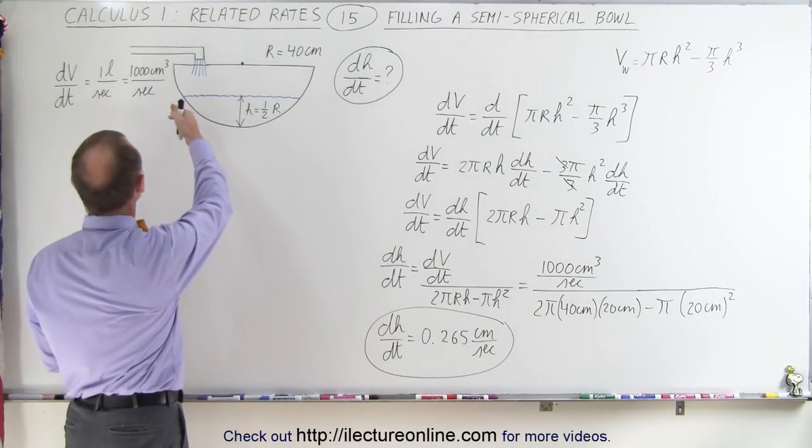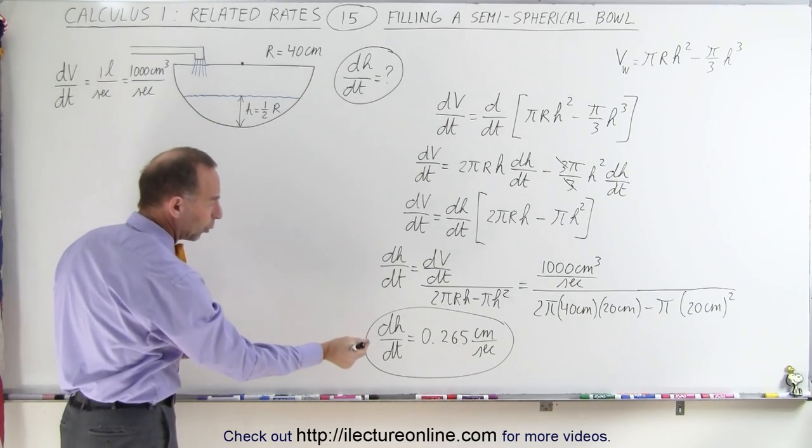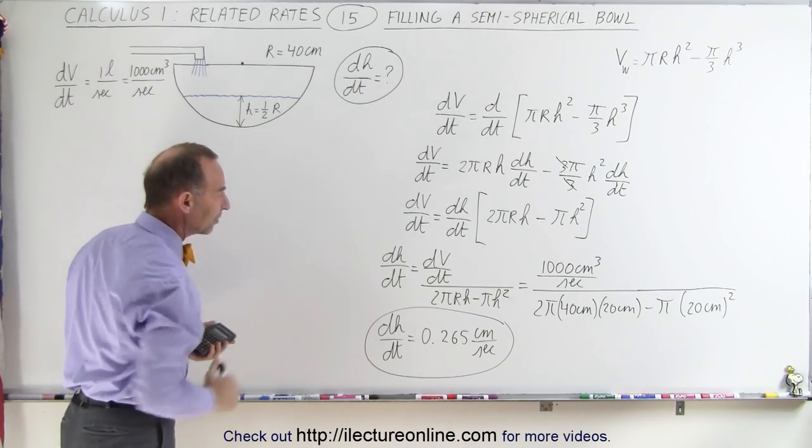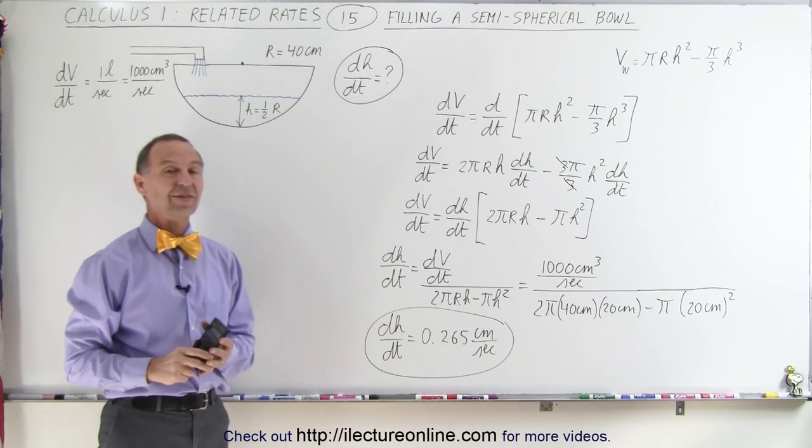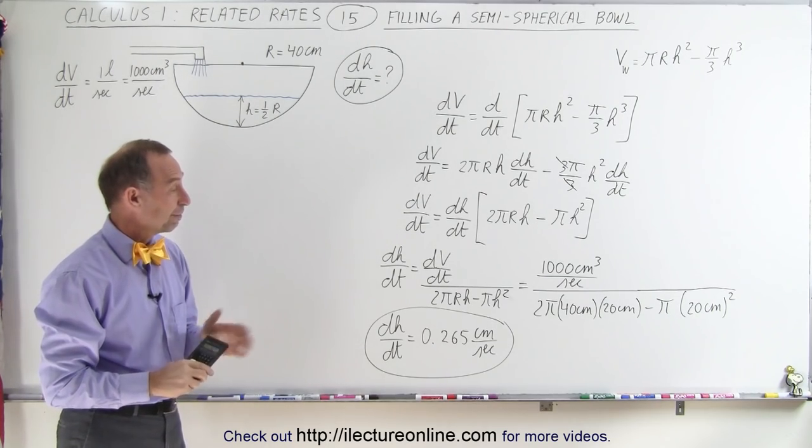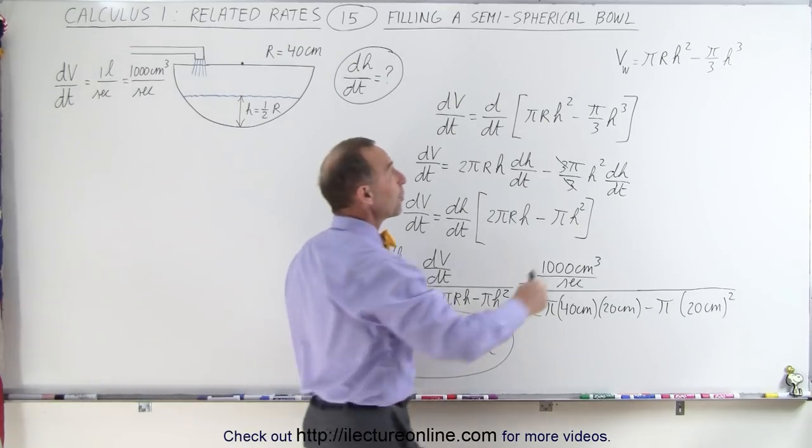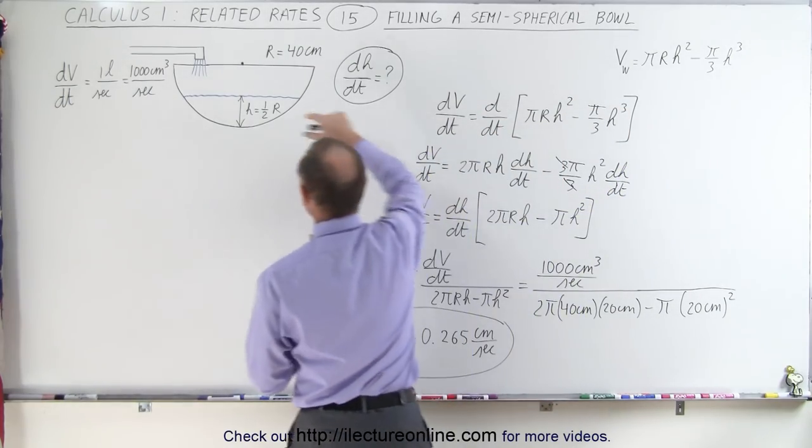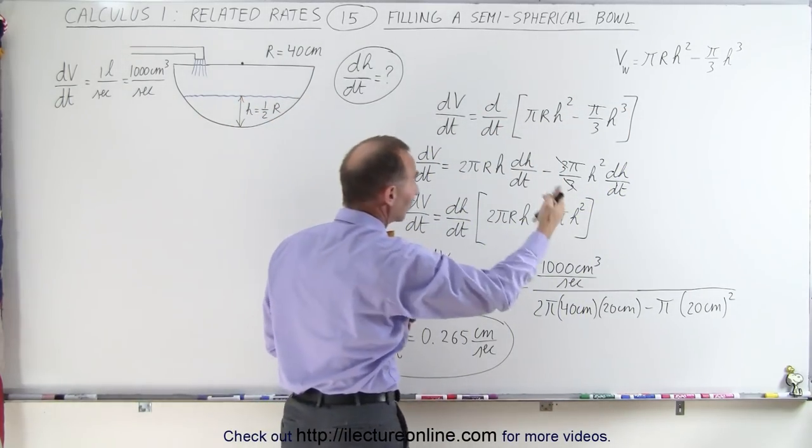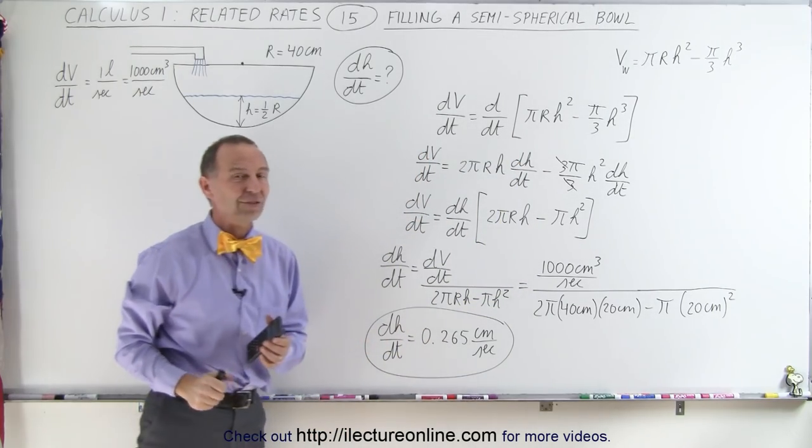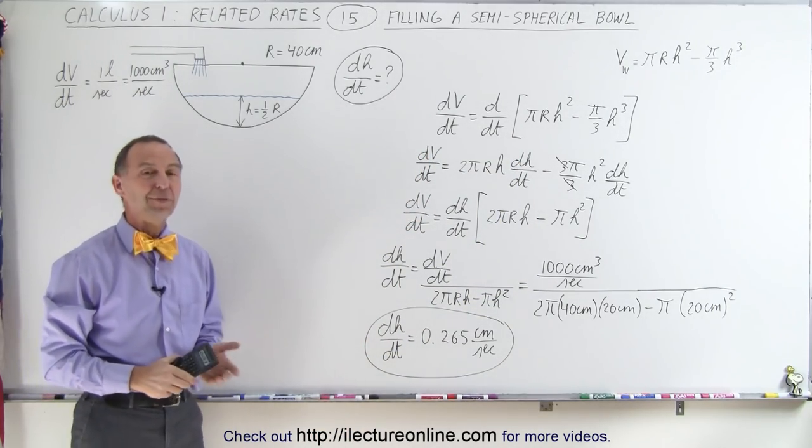So by adding 1 liter per second to this bowl, the water at this moment would be rising at about 2.6 millimeters per second. And that's how we do that. Now, since you might be curious of how we got this equation for the volume of the water portion of the bowl, on the next video we'll show you how to actually calculate that. And that's how it's done.